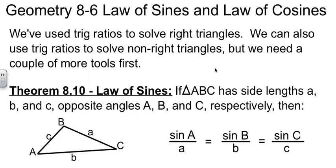And the first one is called the Law of Sines. They gave it to us in the form of Theorem 8.10. If our triangle has three sides A, B, and C that are across from angle A, angle B, and angle C, respectively, in the same order,